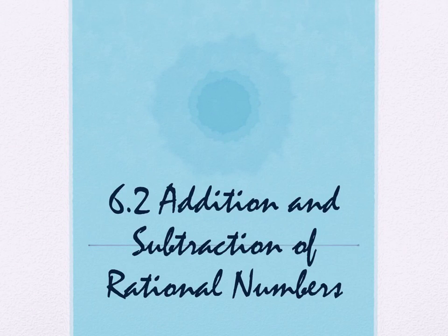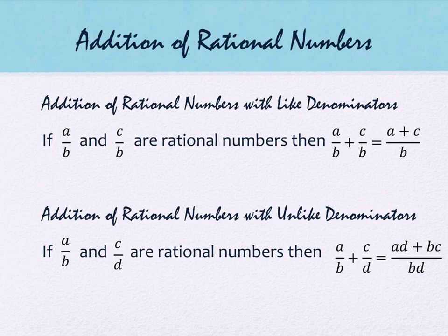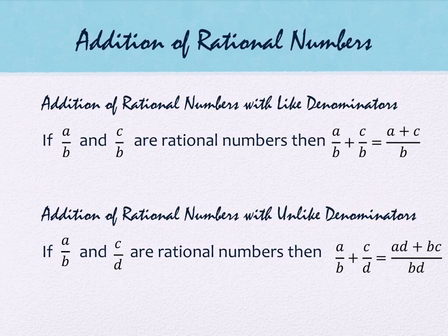Alright, in section 6.2 we are going to do addition and subtraction of rational numbers. We're going to start with the most basic, which is addition, and the most basic of that, which is addition when you have like denominators.